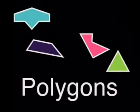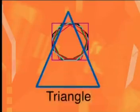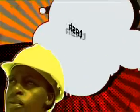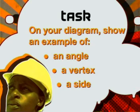In this lesson, we introduced you to polygons. We defined a polygon and its angles, its vertices and its sides. We named some polygons according to how many sides they have. Lastly, we looked carefully at how you name a pentagon. Draw a seven-sided polygon and label it FGHIJKL. On your diagram, show clearly an example of an angle, a vertex and a side.